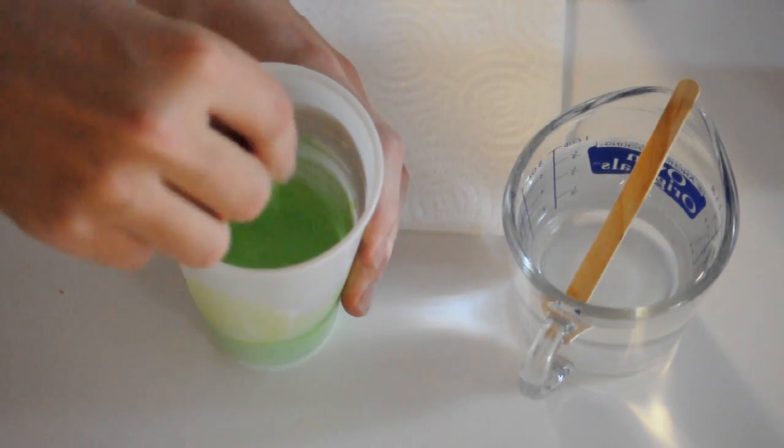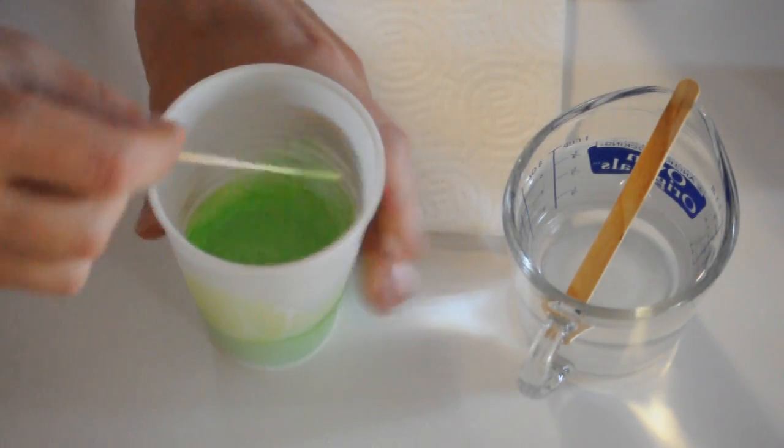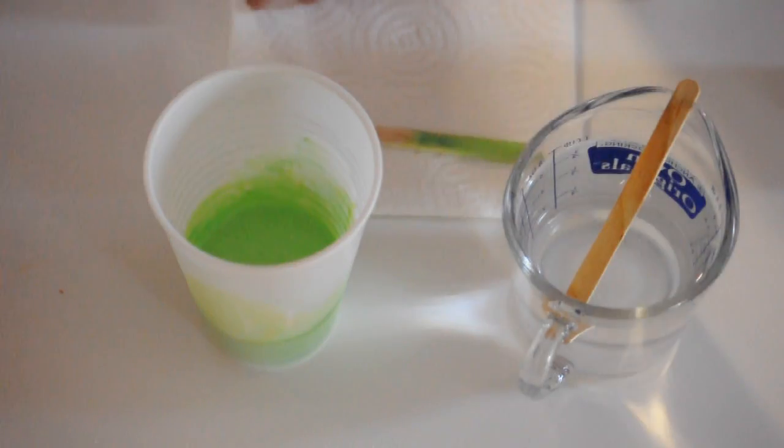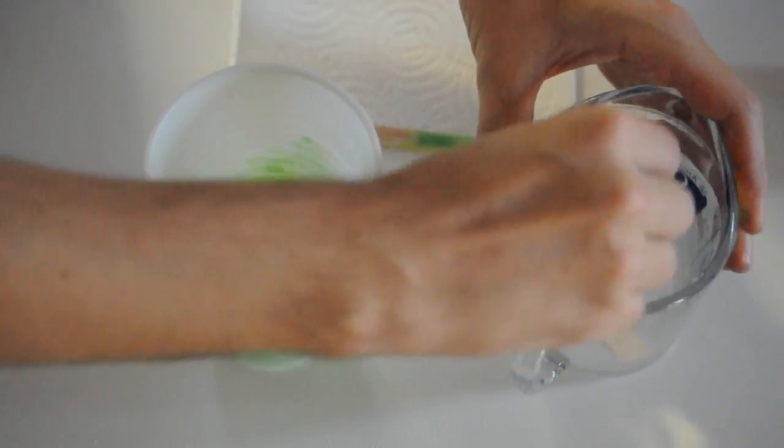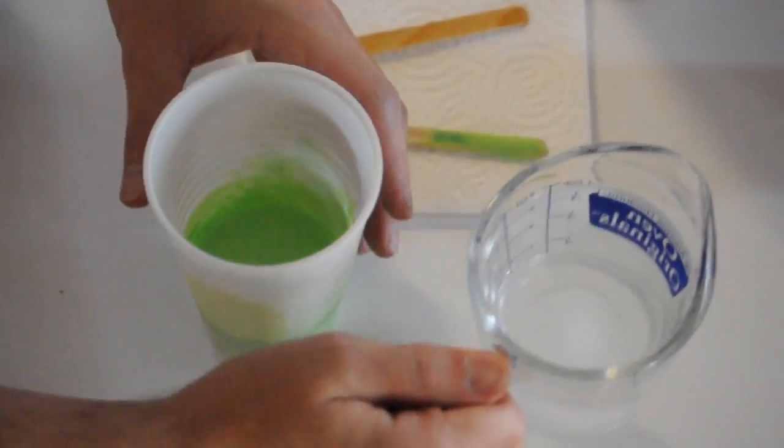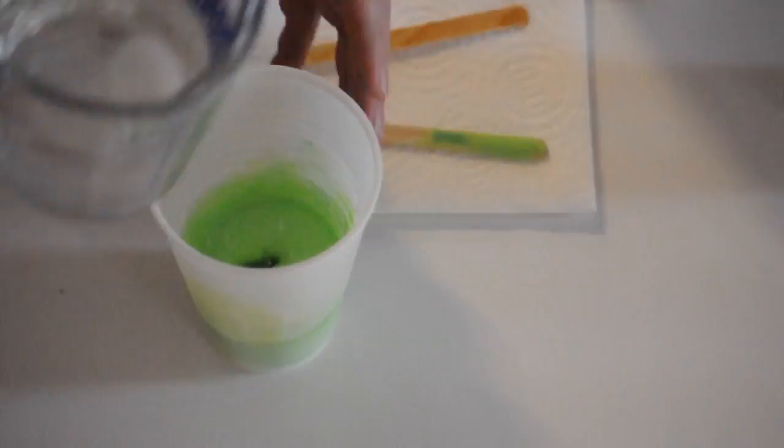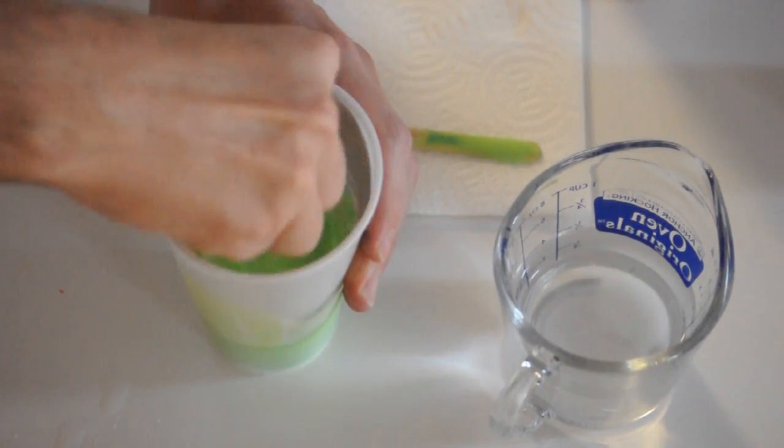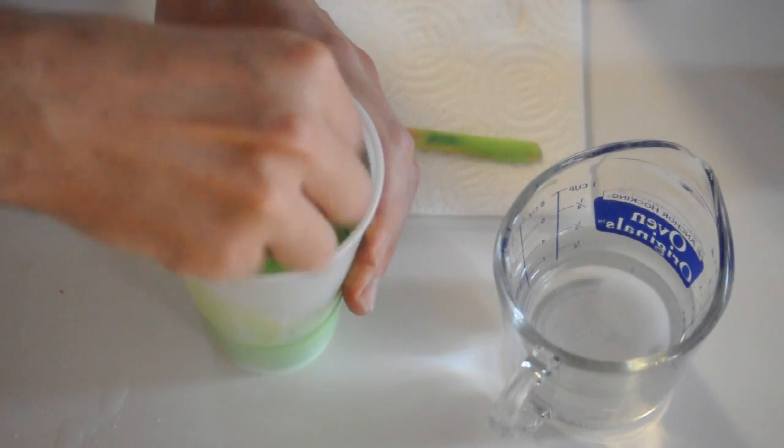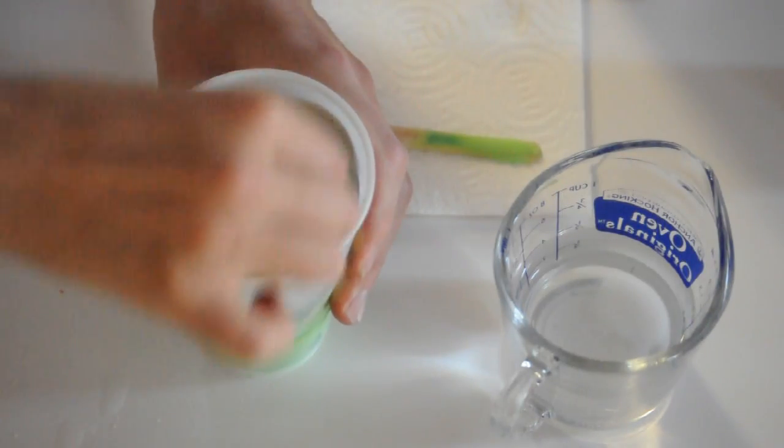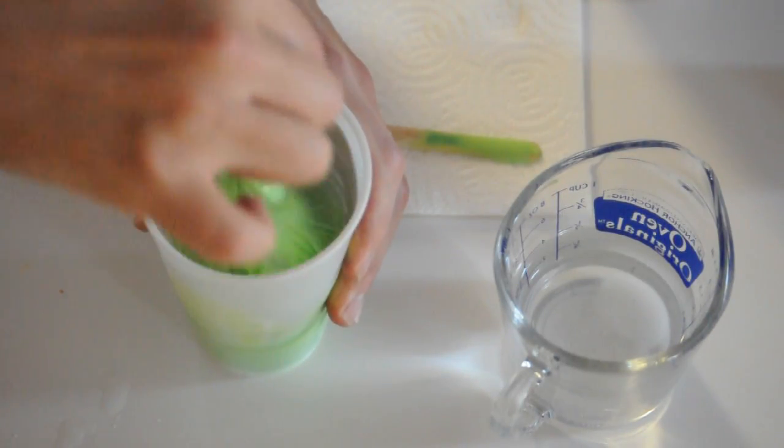Now you want to take your glue stick out. I'm putting mine on a paper towel so that it doesn't stain anything. And we're going to take our water and borax solution. Give it one stir right before we pour it. And we want to pour about half a cup. Then stir that together. It doesn't matter which stick you use. This is weird. It's like gummy. Because you're making slime.